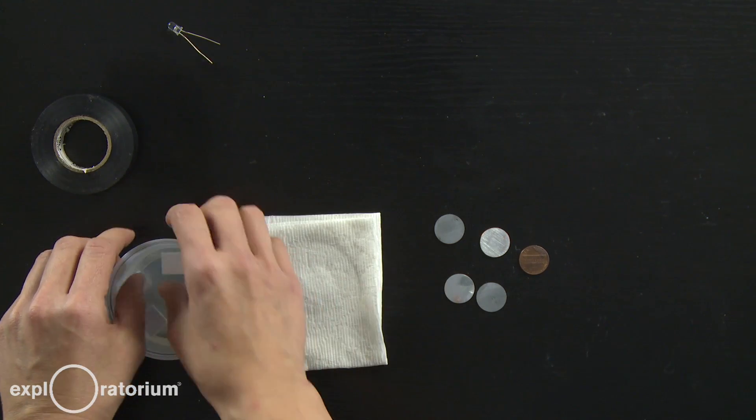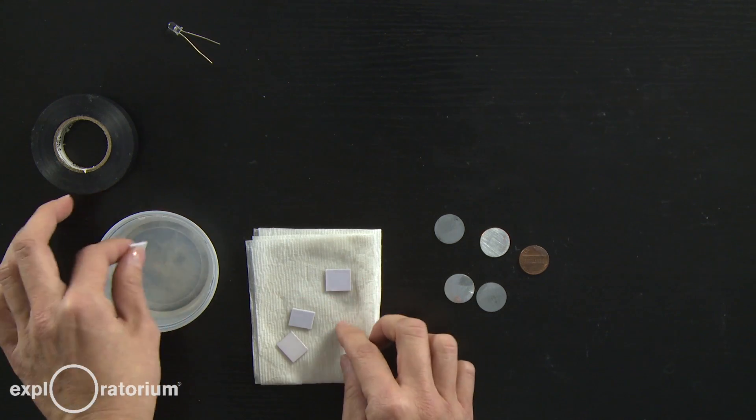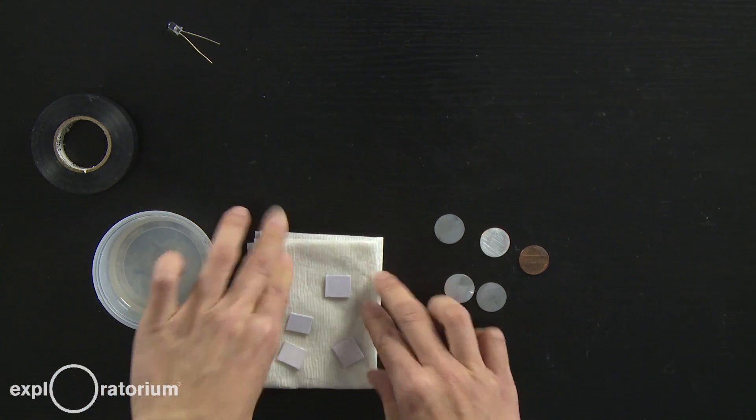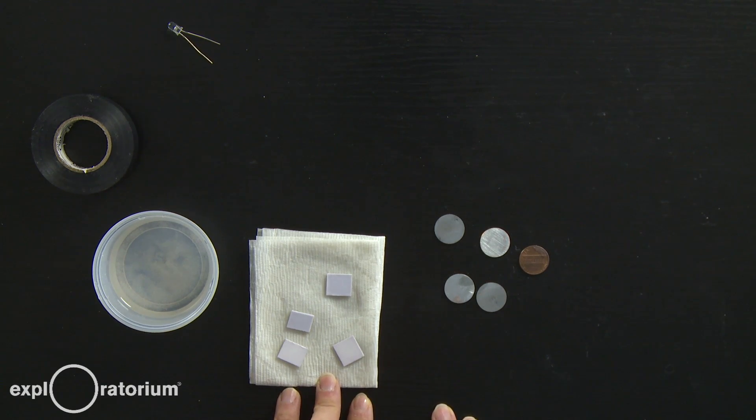Go ahead and take the four mat board squares and dry them off on your paper towel. And we're going to start building the individual cells that will combine in series to create your battery.